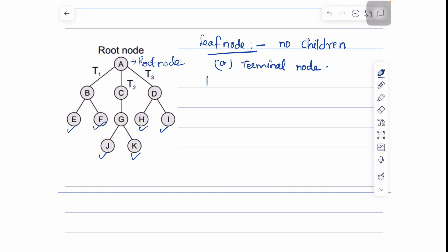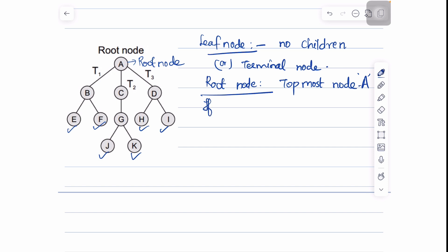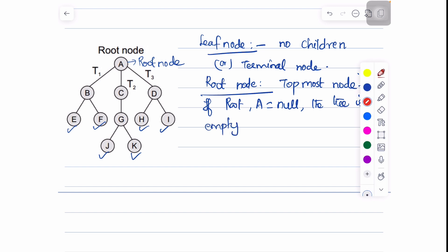The root node is the topmost node of the tree, and here the topmost node is A, so node A is called the root node. If the root node is null, it means the tree is empty — when the root node equals null, we define the tree as empty.